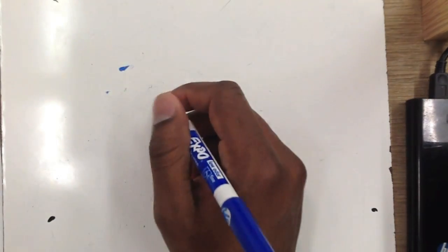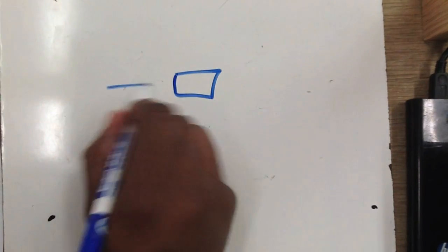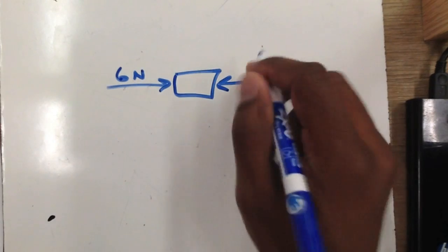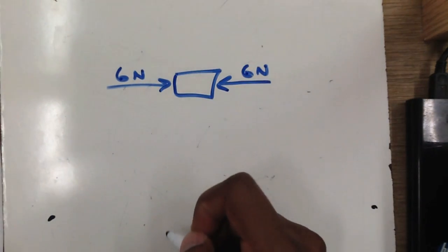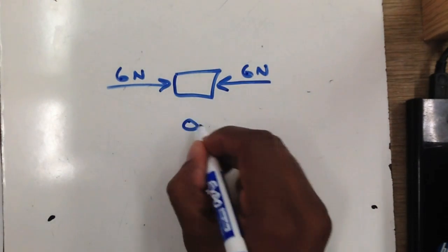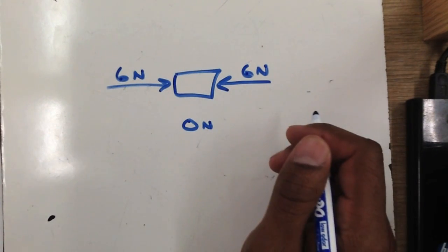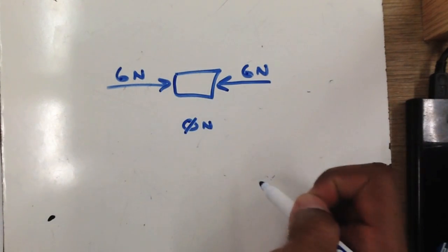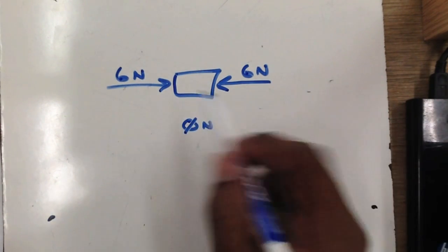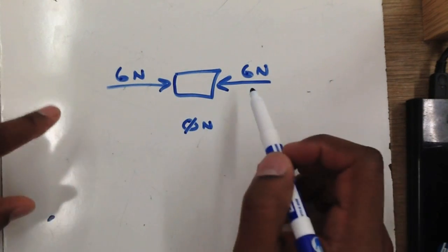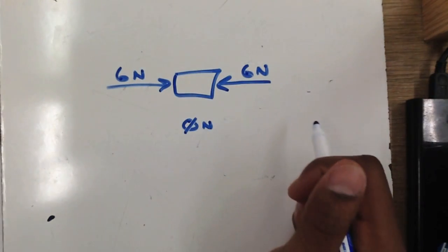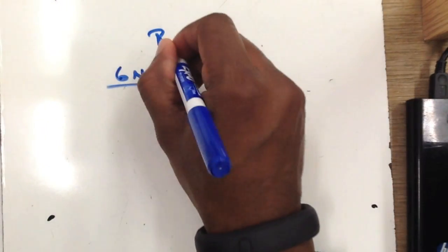What happens when the net force on an object is zero? If someone pushes from one side with 6 newtons and there is also a force of 6 newtons from the other side, the net force is zero newtons. The forces are balanced and there will be no change in motion. This makes sense — if two people push a dresser from opposite directions with the same amount of force, it won't move. These forces are balanced.